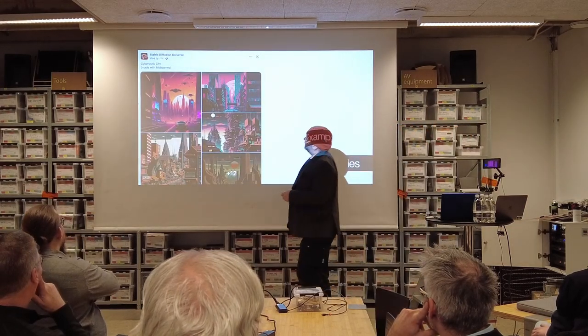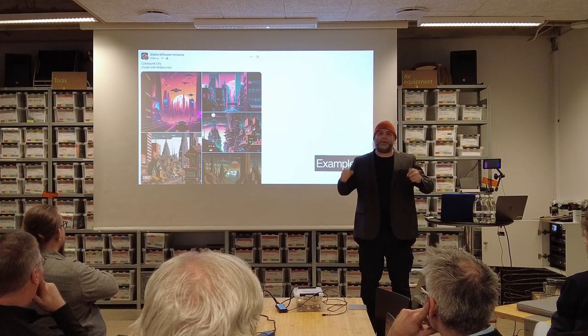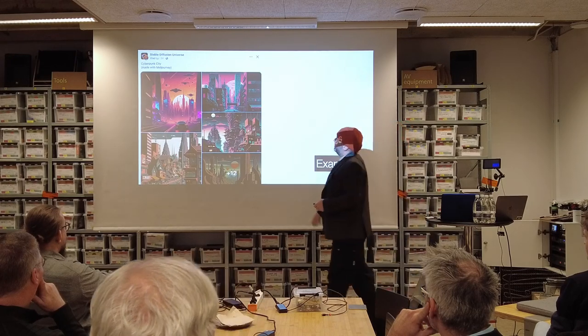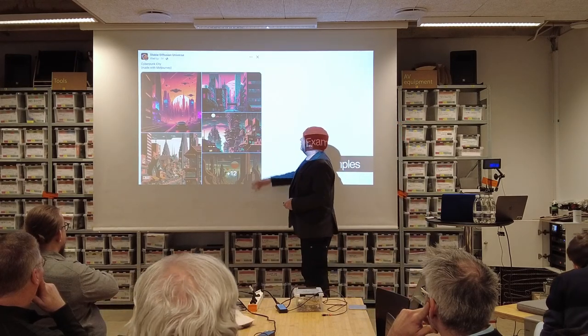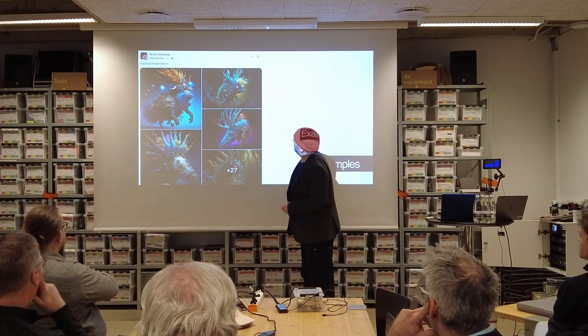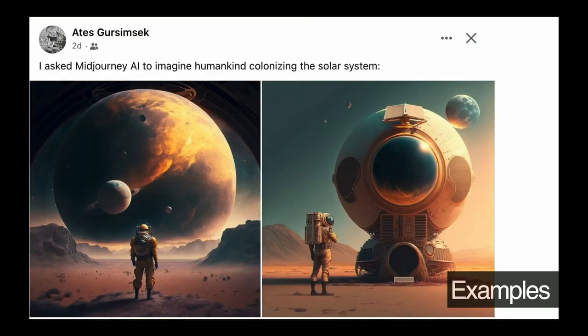What do examples look like? One thing these AI art generators are very good at is mixing styles. You can say 'I want the film Terminator 3, but now as a hentai comic' — they're pretty good at that. Here we see a sort of cyberpunk city, and here we see some very interesting underwater monsters. This is Ates from Rook — he asked the AI to imagine humankind colonizing the solar system.